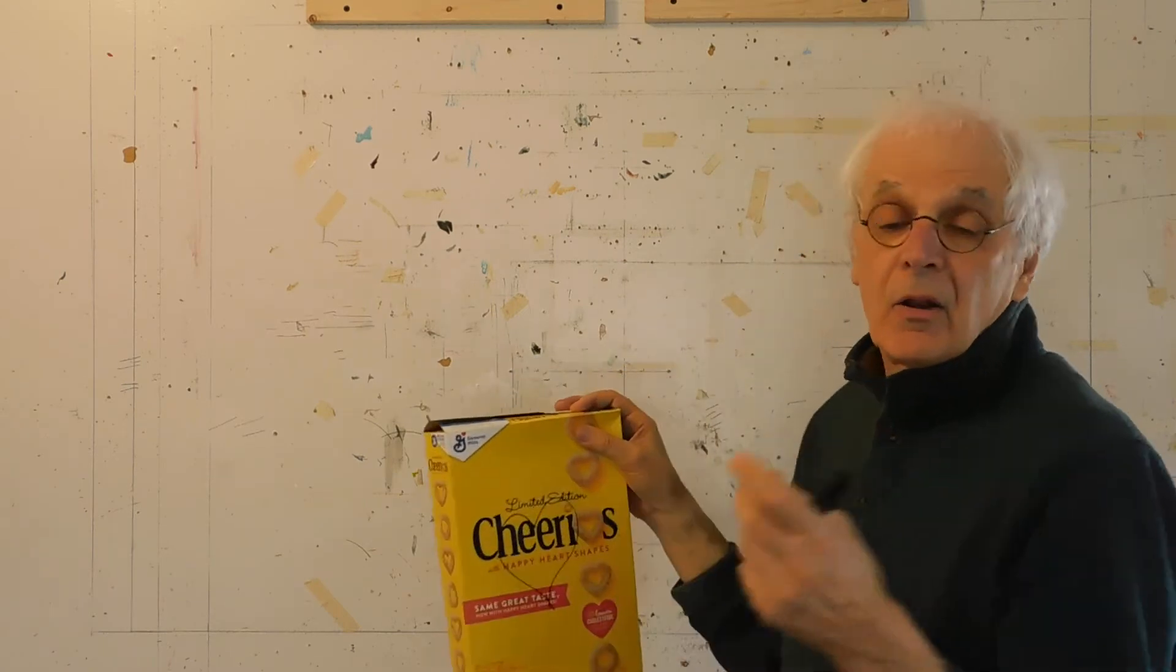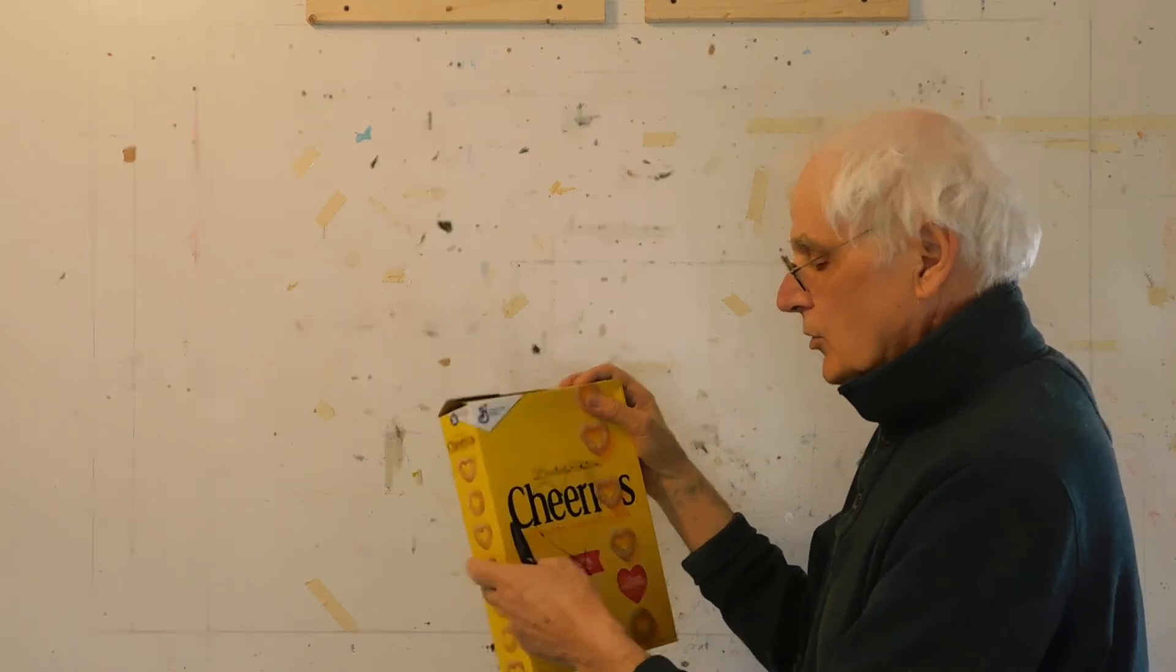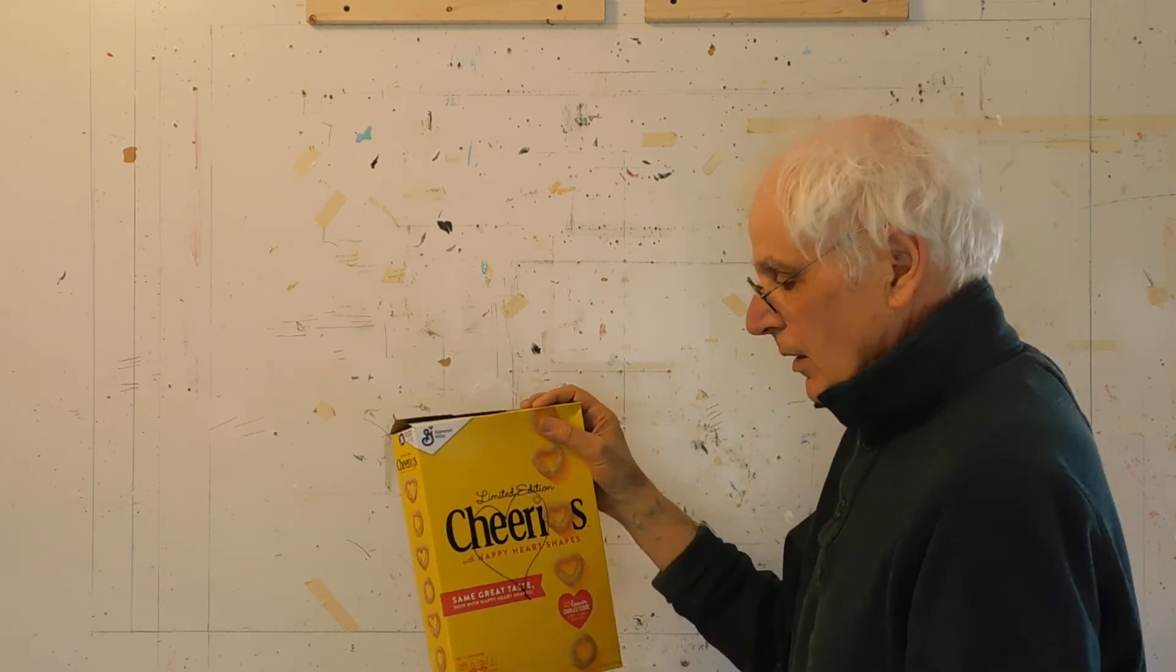You can only see three surfaces at a time. You cannot see all of them, which are one, two, three, four, five. So how do we do that? With diagonals.